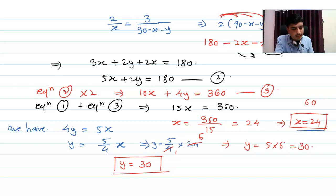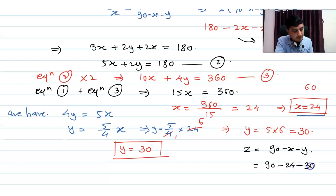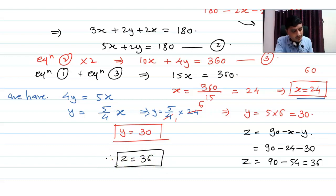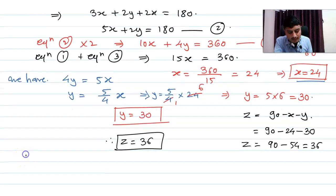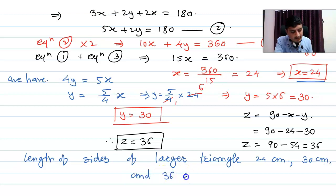To find z: z = 90 − x − y = 90 − 24 − 30 = 36. Therefore, the sides of the larger triangle PQR are x = 24 cm, y = 30 cm, and z = 36 cm.